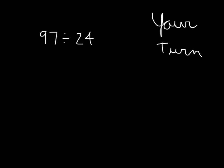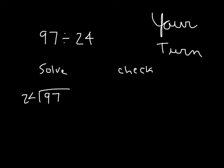It's your turn. Take 97 and divide it by 24. Go ahead and solve it using the standard algorithm and check. Pause the video. 24 goes into 97 — how many whole times? Did you choose 4? 4 times 4 is 16, regroup 1. 4 times 2 is 8, plus 1 is 9. 97 minus 96 is 1. So our solution is 4 with a remainder of 1.